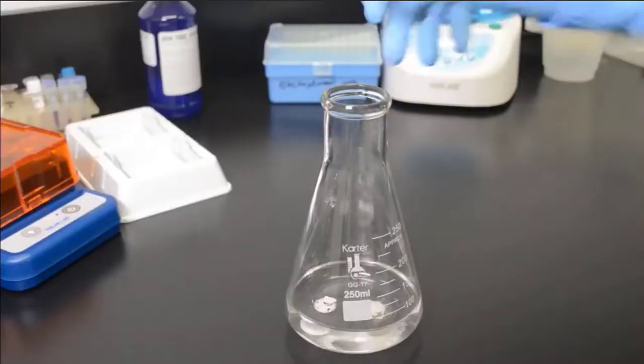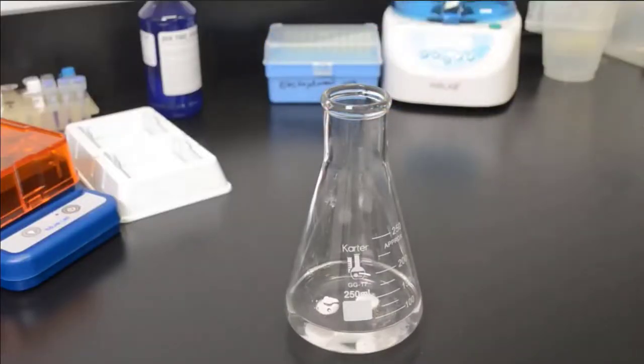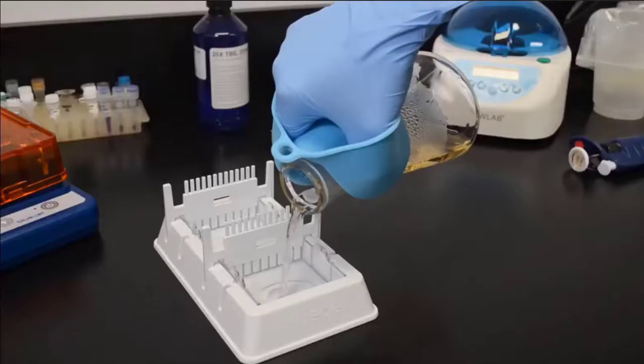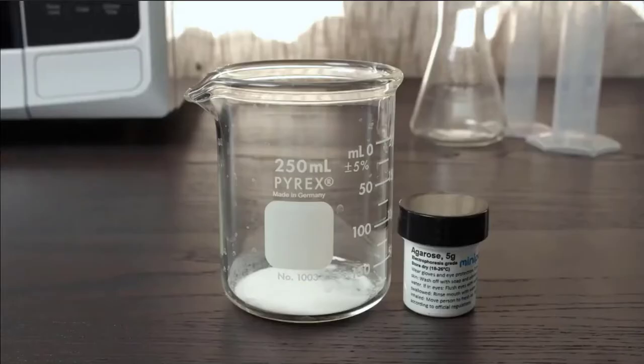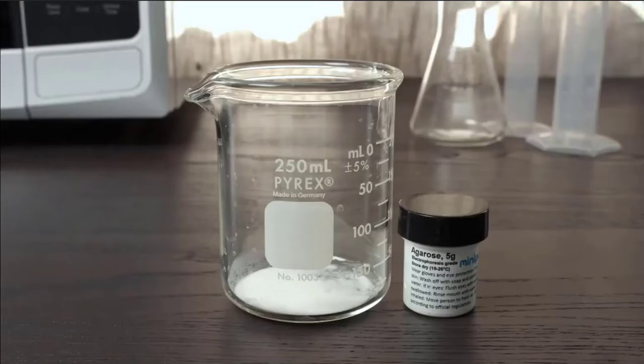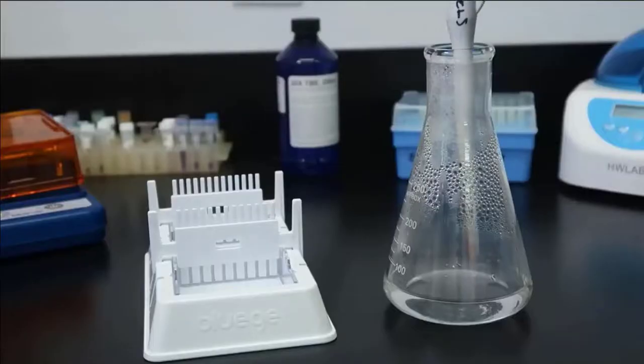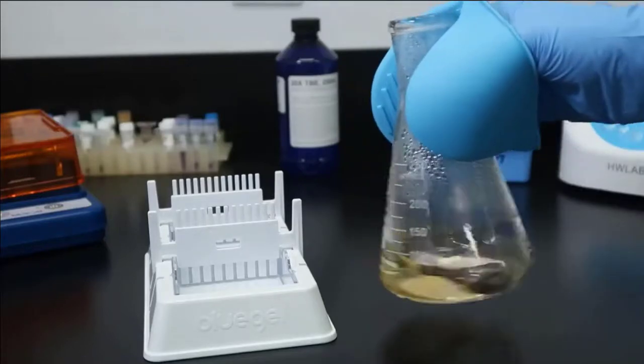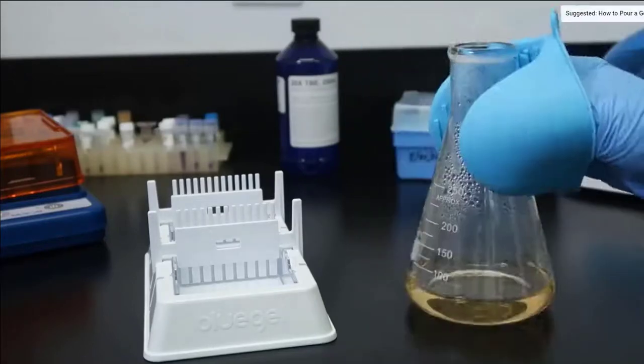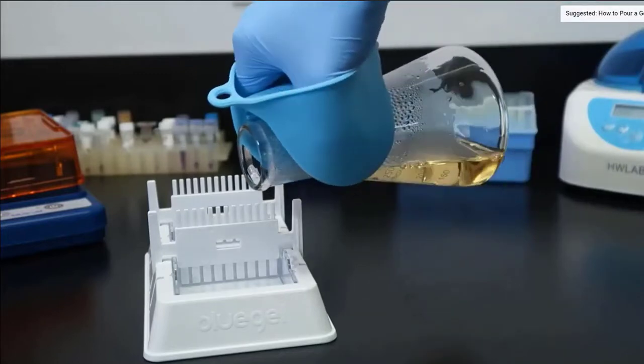To create an agarose gel, we dissolve agarose in an electrophoresis buffer, boil it, and add it to a gel casting tray. Typically, agarose comes as a powder, but it also sometimes comes as a pre-weighed tablet. We usually also add a DNA stain at this step to make visualization of our samples easier later on. To learn more about gel pouring, you can watch our How to Pour a Gel video linked below.